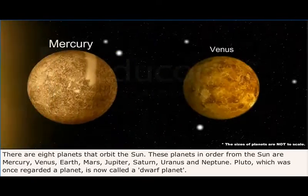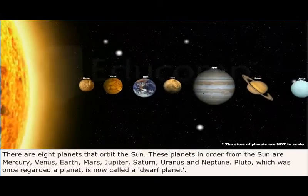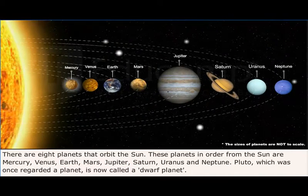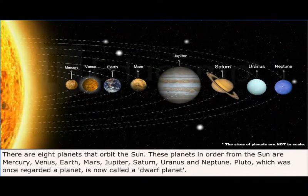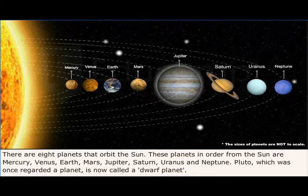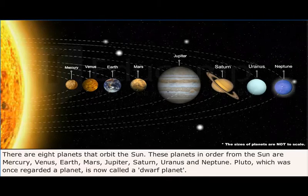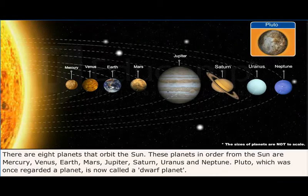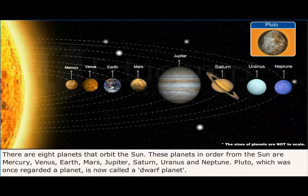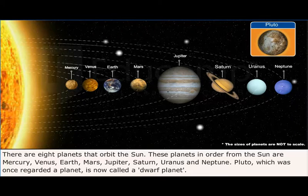There are eight planets that orbit the Sun. These planets in order from the Sun are Mercury, Venus, Earth, Mars, Jupiter, Saturn, Uranus, and Neptune. Pluto, which was once regarded as a planet, is now called a dwarf planet.